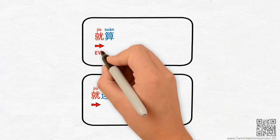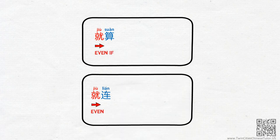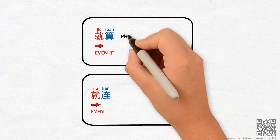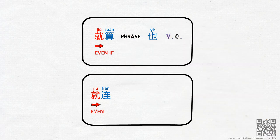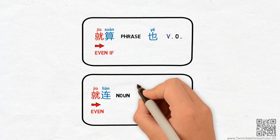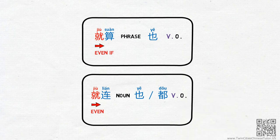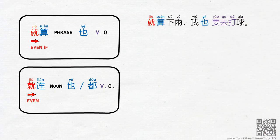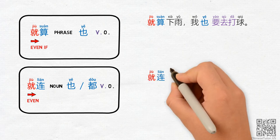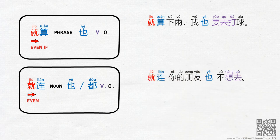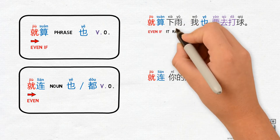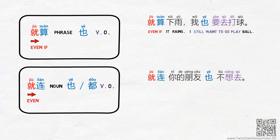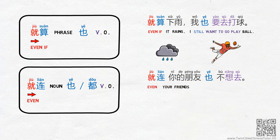They are used to convey the idea of 'even if' or 'even.' The patterns go: jiusun plus phrase plus 也 plus verb-object; and jiulian plus noun plus 也 or 都 plus verb-object. For example, Taylor says: 就算下雨我也要去打球, and Mom says: 就连你的朋友也不想去. The answers are: 'Even if it rains, I still want to go play ball,' and 'Even your friends do not want to go.'